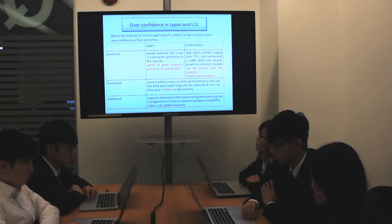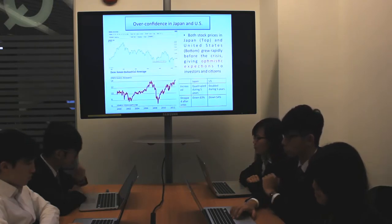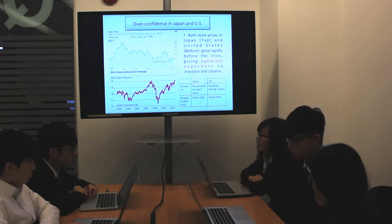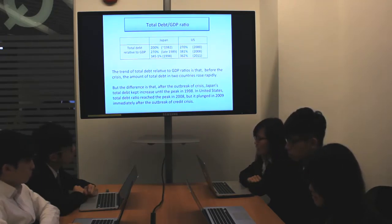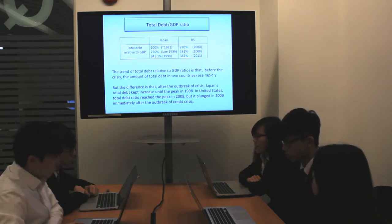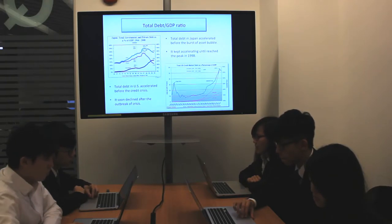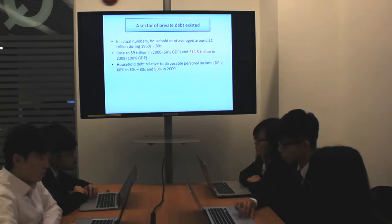Over-confidence also existed in the pre-crisis U.S. As mentioned, U.S. land prices had increased for at least 30 years, and people did not believe that their property market would collapse. The well-performing stock markets in Japan and the U.S. gave optimistic expectations to investors. Here are some statistics about total debt relative to GDP ratio. At the time of the outbreak of the Japan asset bubble in late 1989, the total debt relative to GDP was about 270%. For the U.S., the ratio was extremely high at 381% in 2008. The private sector debt in Japan tripled within 10 years, while in the U.S., household debt rose to 100% of GDP, accounting for US$14.5 trillion just before the credit crisis burst.